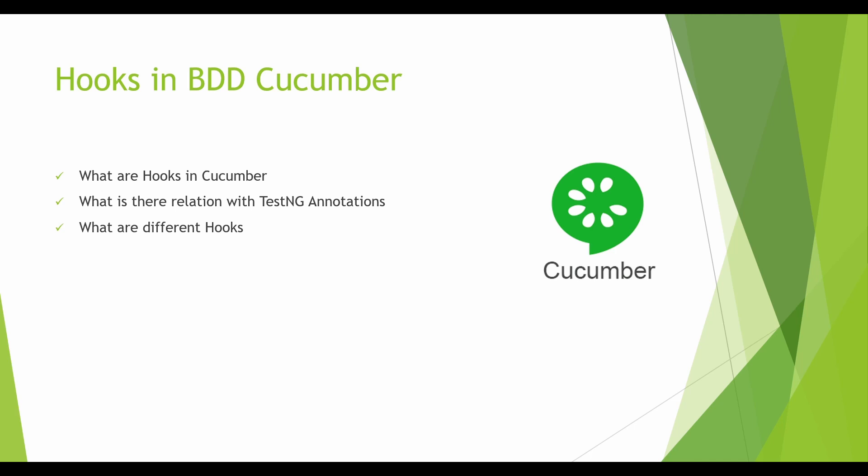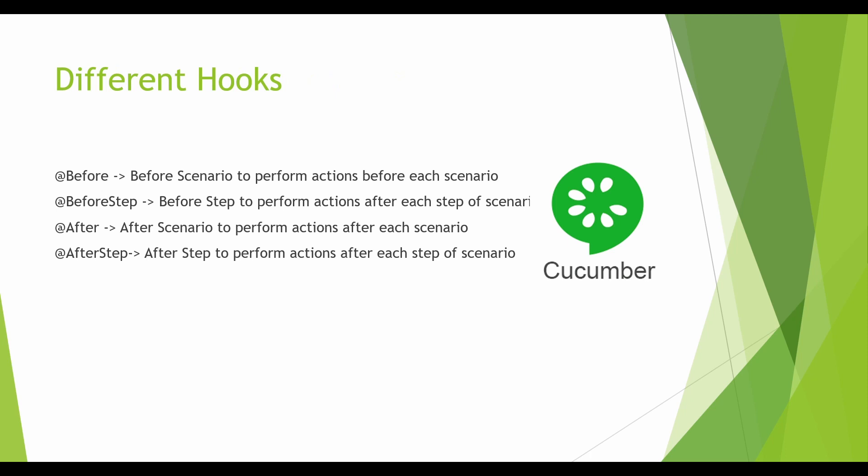These provisions are known as hooks. Hooks and TestNG annotations are both similar — in TestNG we call them annotations, and in Cucumber we call them hooks. There are four major hooks widely used: Before, BeforeStep, After, and AfterStep. Before is used to perform certain actions before each scenario, BeforeStep before each step, and After and AfterStep for post-execution operations after a scenario or after each step.